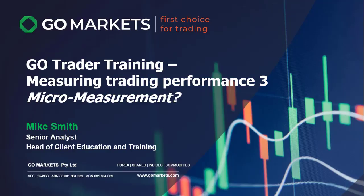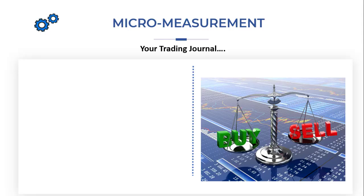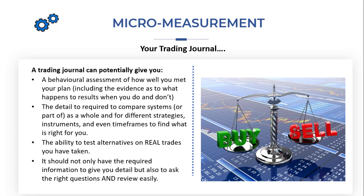Now you have your macro numbers in place as per the last video, we're going to look at micro measurement. The first is micro measurement in terms of your trading system, and the key tool you have to put in place is your trading journal, to be able to see what is creating that win-loss ratio and the average win versus average loss.